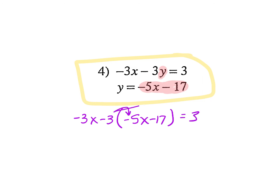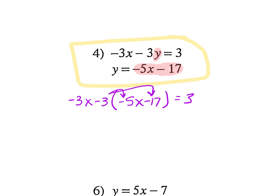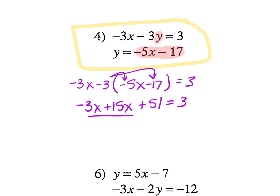Same steps — distribute that negative 3. Just be careful with your math. Negative 3x, and a negative times a negative gives positive 15x. What's negative 3 times negative 17? Positive 51 equals 3. Clean this up: what's negative 3 and 15? 12x. So 12x plus 51 equals 3.